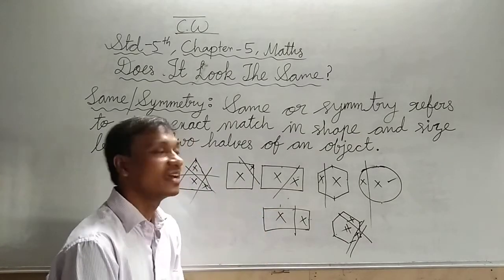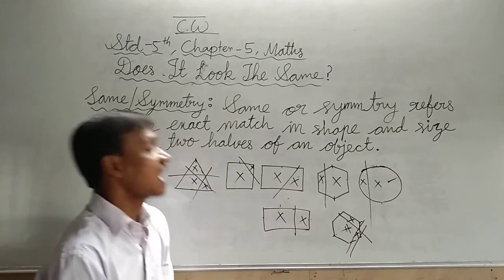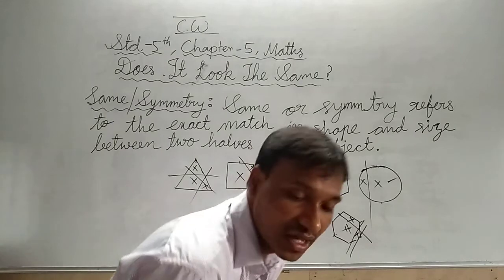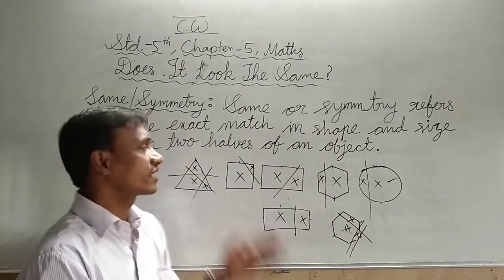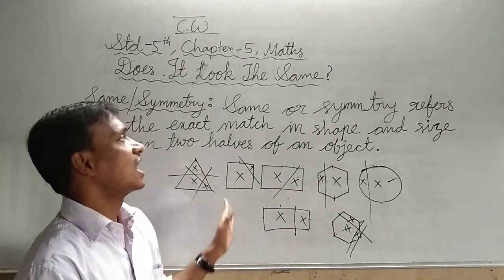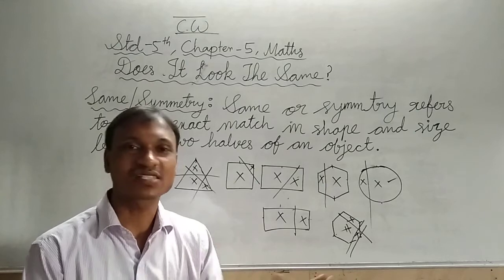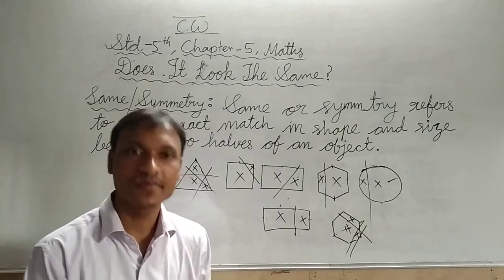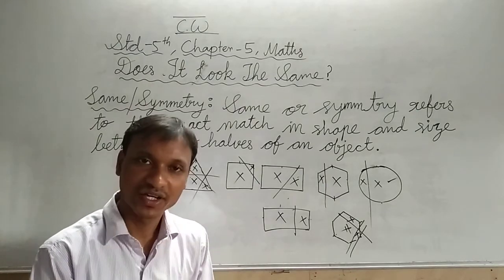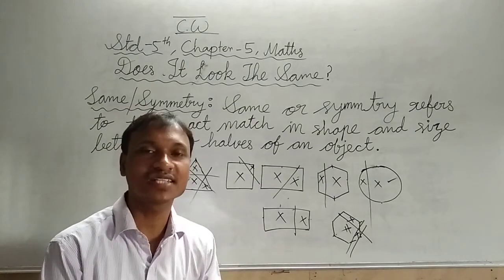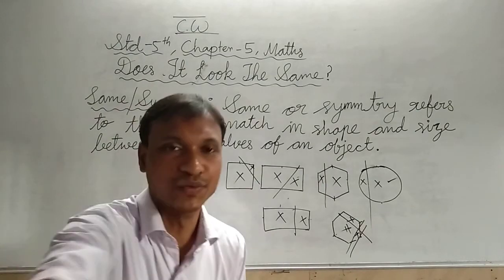We can say that both sides are the same or not the same. You can find that both sides are same or not. Understand students? Thank you.